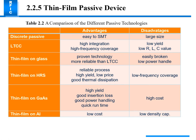A comparison of different passive technology advantages and disadvantages: discrete is classic, easy to SMT but large size. LTCC offers high integration and high frequency coverage but low yield with respect to RLC values. HRS glass can be broken easily. Thin film on HRS involves a labor-intensive process but high yield and good thermal dissipation with low frequency coverage. Silicon on insulator gives high yield, good insertion loss, good power handling, quick turnaround, but very high cost. Thin film on aluminum is low cost but low density.